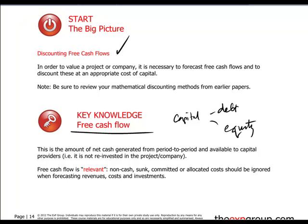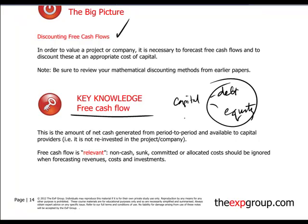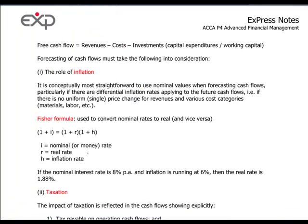We're looking at the project's ability to create or generate surplus cash flows which will go to those people who are financing it. We're looking for relevant cash flows because when we appraise projects, we have to identify and measure the relevant cash flows in order to come to a valid conclusion as to whether a project is worth doing or not. The free cash flow may also have an inflation factor in it, and therefore we may be inflating the cash flows to arrive at nominal or money cash flows, which may be the basis on which we do the discounting.